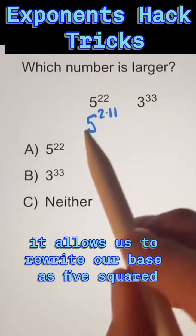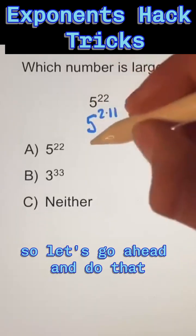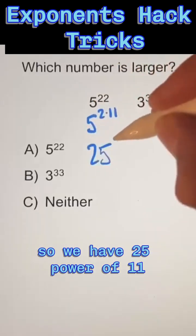So what that does is it allows us to rewrite our base as 5 squared. So let's go ahead and do that. So we have 25 to the power of 11.